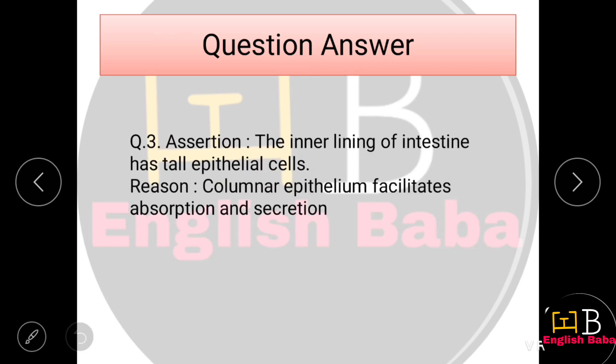Assertion-Reason Question 3. Assertion: The inner lining of the intestine has tall epithelial cells. Reason: Columnar epithelium facilitates absorption and secretion.